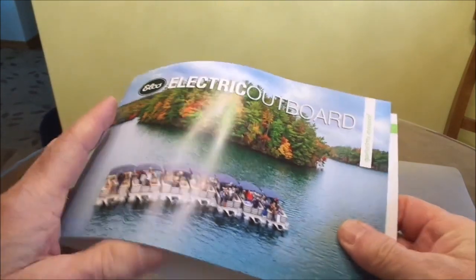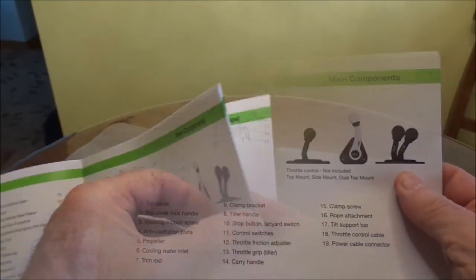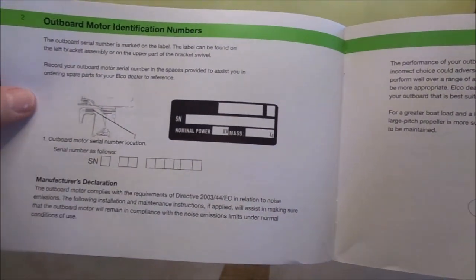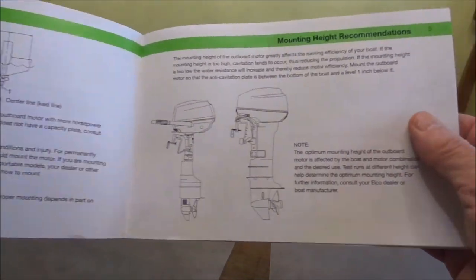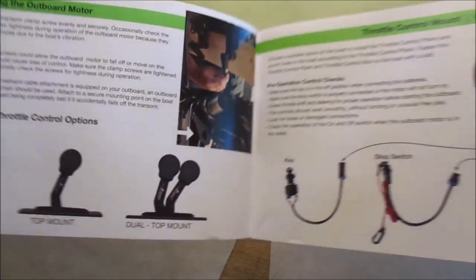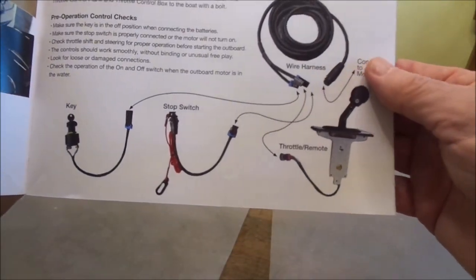And this is the manual that comes with the motor. And a lot of people will not read the manual, but I recommend reading it from beginning to end. I need to put my identification number down on here, my serial number. Propeller selection, installation, mounting height recommendations, clamping the outboard. And here is what I just demonstrated on the throttle control mount. Lots of good information.